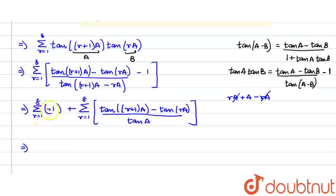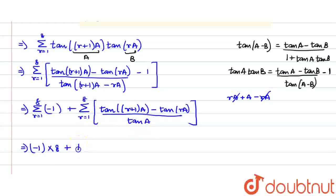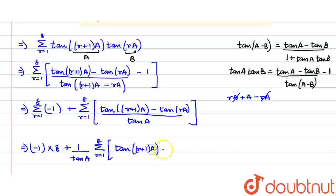If you take a look at this term, this −1 is getting summed from 1 to 8 — so basically, 8 times you have to add −1. We can simply write this as −1 times 8. Plus, since tan(a) is constant, I will take it out: (1/tan(a)) multiplied by summation r equals 1 to 8 of [tan((r+1)a) minus tan(ra)].